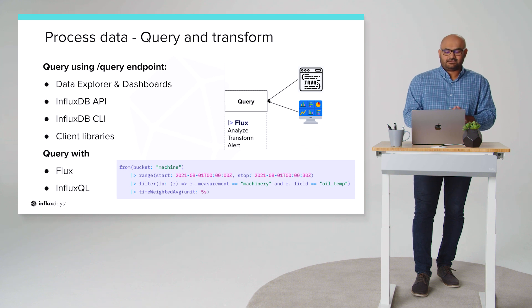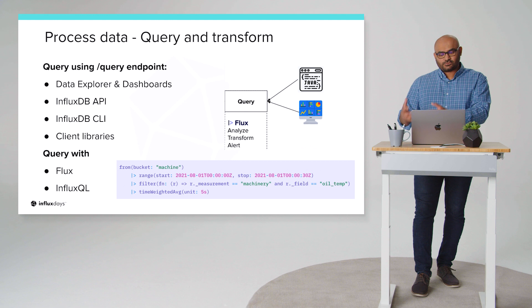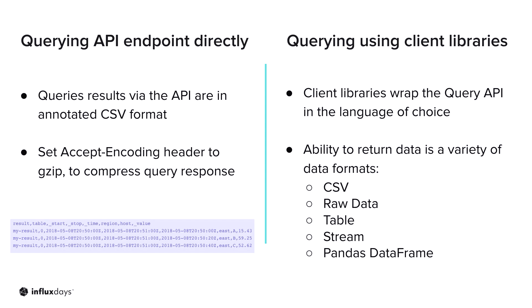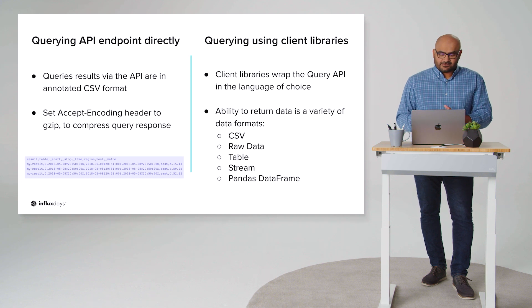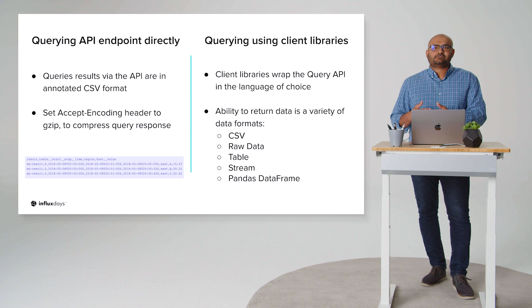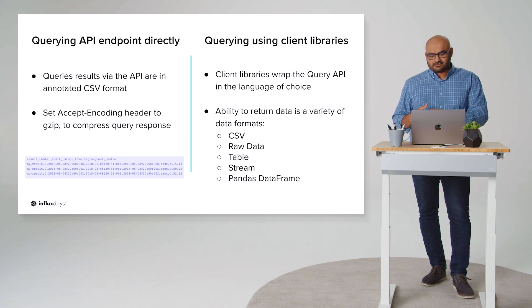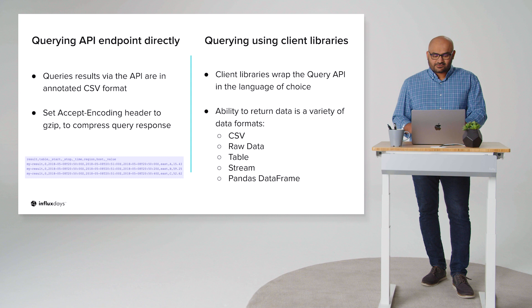Just like with ingest, we have client libraries in the language of your choice that make querying and, more importantly, output transformations really simple. When querying the API endpoint directly, the query results are in annotated CSV format — a tabular format as you can see in the snippet. You can also push down more data in the query response by zipping the content. When using the client libraries, that same endpoint is wrapped in the language of your choice, and you have the ability to receive the response in a wide variety of data formats — CSV, raw data, streams, or even a pandas DataFrame.